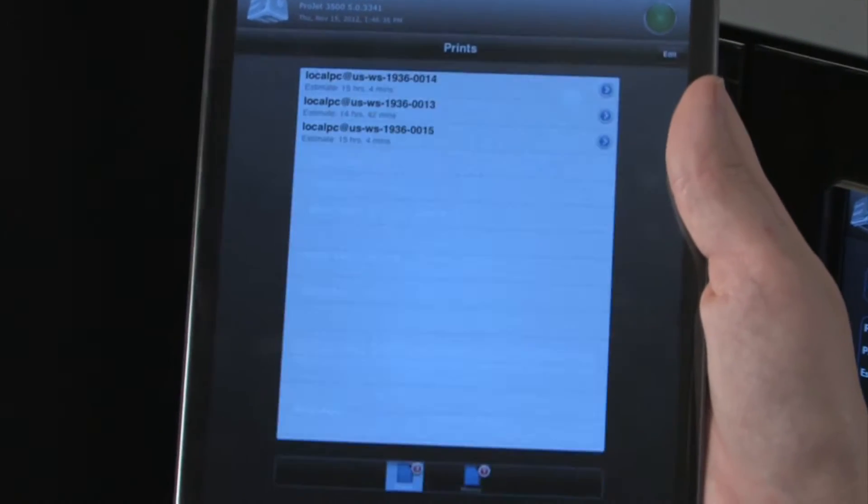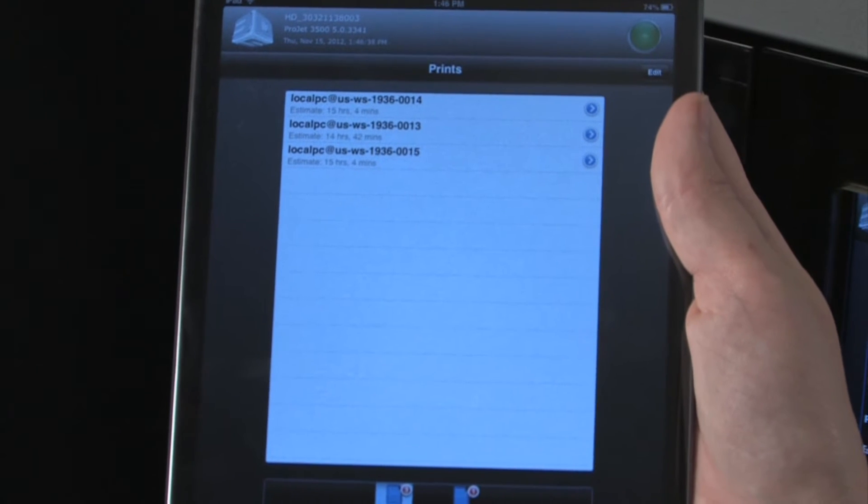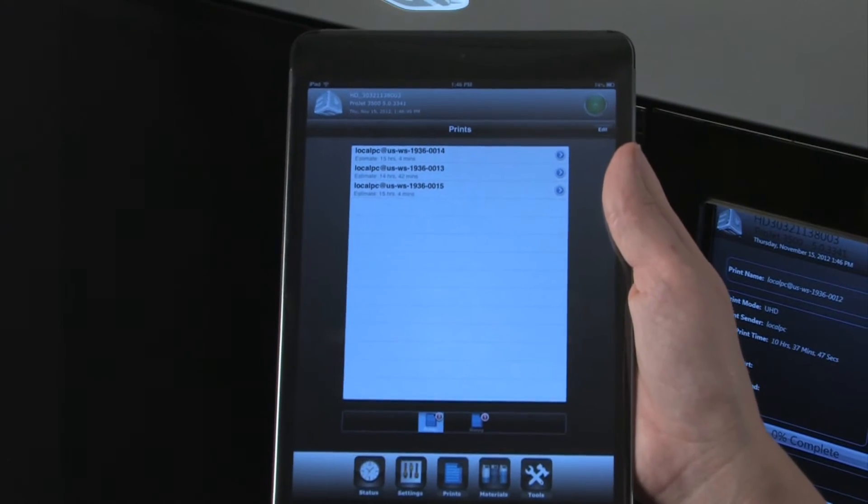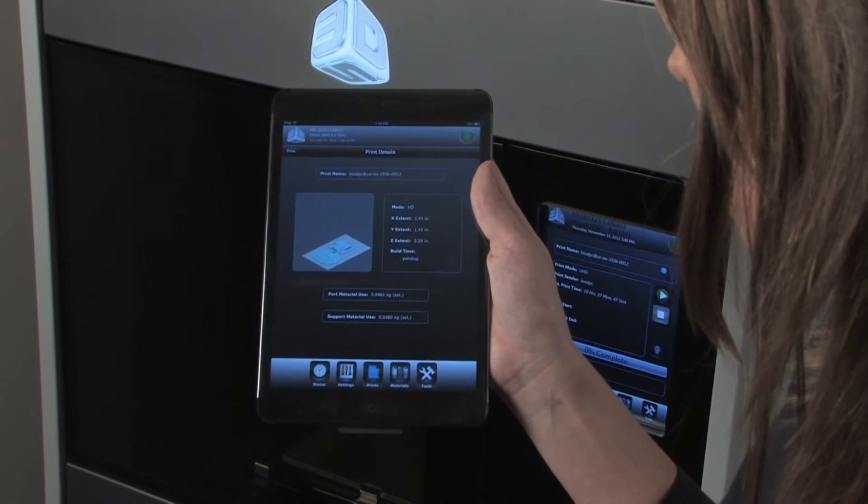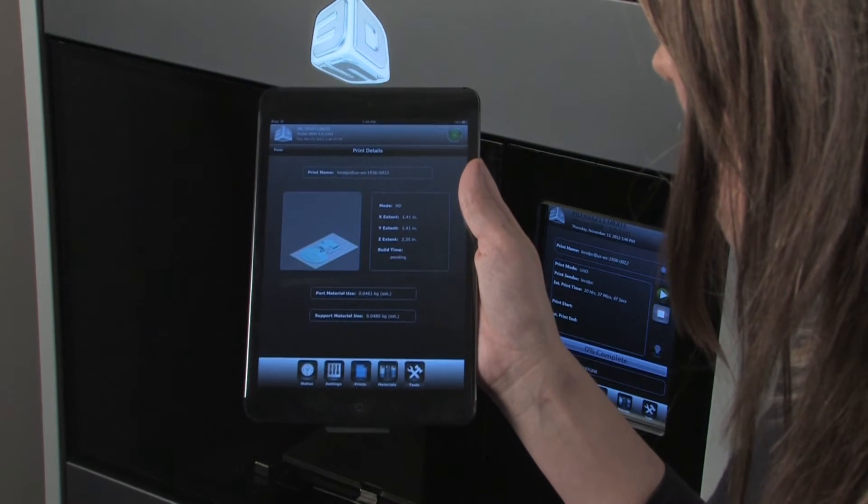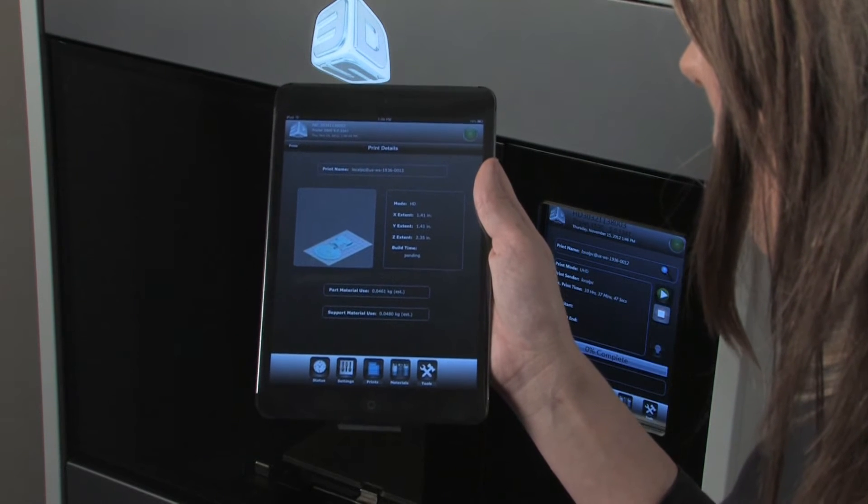The Print Queue Management function lets you make real-time decisions about which print is important to run next so you can make changes on the go. You can access important information about each print job, including estimated print time and material required.